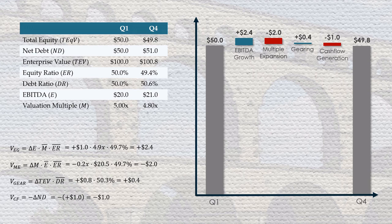Now, as investors, we are usually more concerned about the returns of a specific shareholder, like a fund or a GP. In this deal, the GP's equity value actually goes up from $30 to $31 million. This may look strange, but it's pretty common — it can happen when a fund owns participating preferred securities.